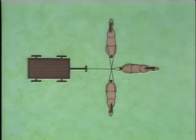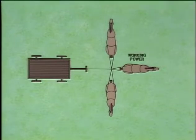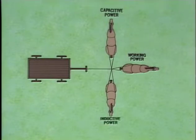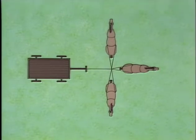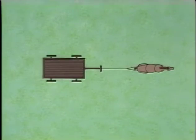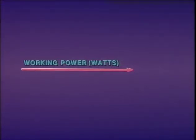This illustration is a bird's eye view of a wagon with three horses hitched to it. The goal is to perform work efficiently by moving the wagon in a straight line from left to right. The horse at the right represents watts, or working power. The horse at the top represents capacitive vars, or non-working capacitive power. The horse at the bottom represents inductive vars, or non-working inductive power. If the top and bottom horses pull with equal force, they cancel each other's efforts, and the middle horse pulls the wagon straight to the right. In a T&D system, if non-working capacitive power and inductive power are equal, they cancel each other out, leaving only working power.